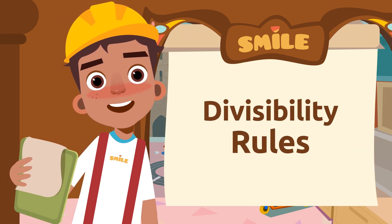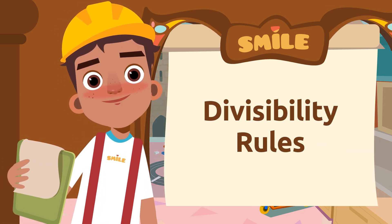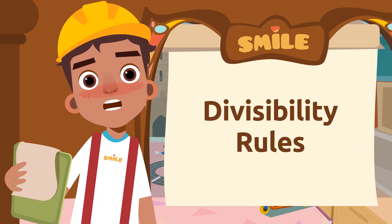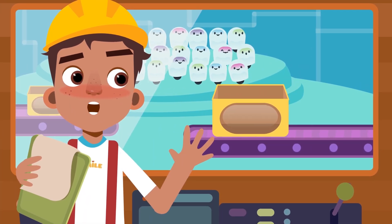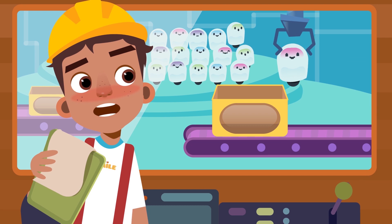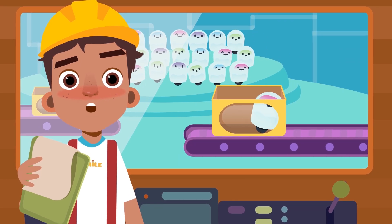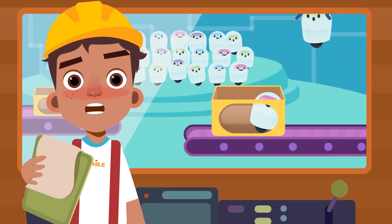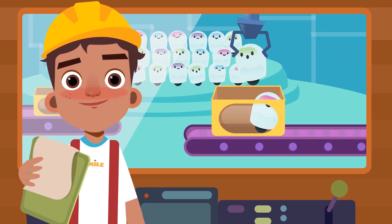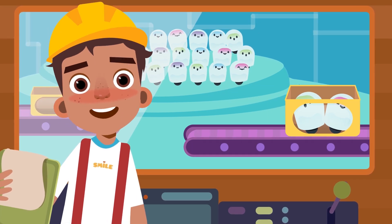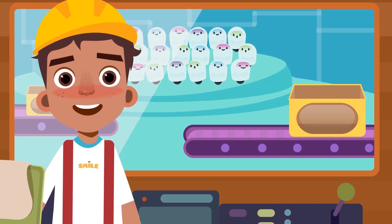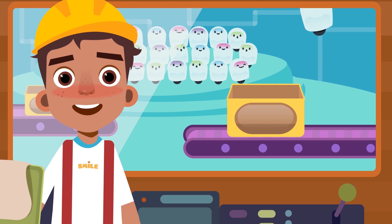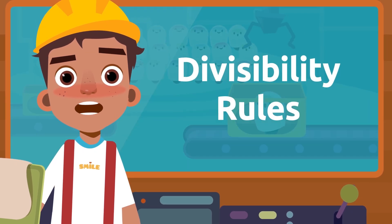We call them the divisibility rules. I'll tell you about some of them. Look at how many robots there are. We want to put two in each box, but we need to know if there will be any left over. We can't send any boxes with only one robot. To find out, we'll be using the divisibility rules.